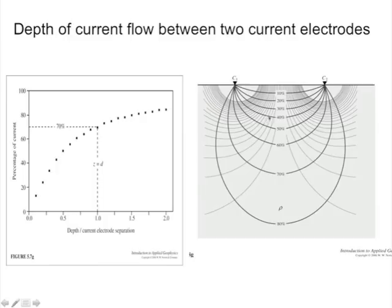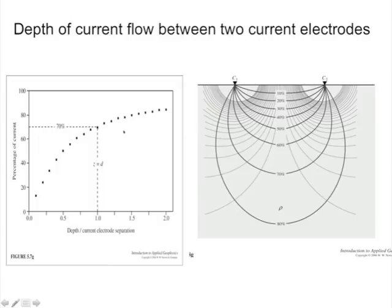This is a very important concept because it's how we get our depth sensitivity. If 85–90% of the current is going above the depth to some change in resistivity, we're never going to see that change — it's as if we're in a half-space. Once we start to get more than 30% of the current below an interface and into another medium with a different resistivity, then it's going to start affecting our experiment.